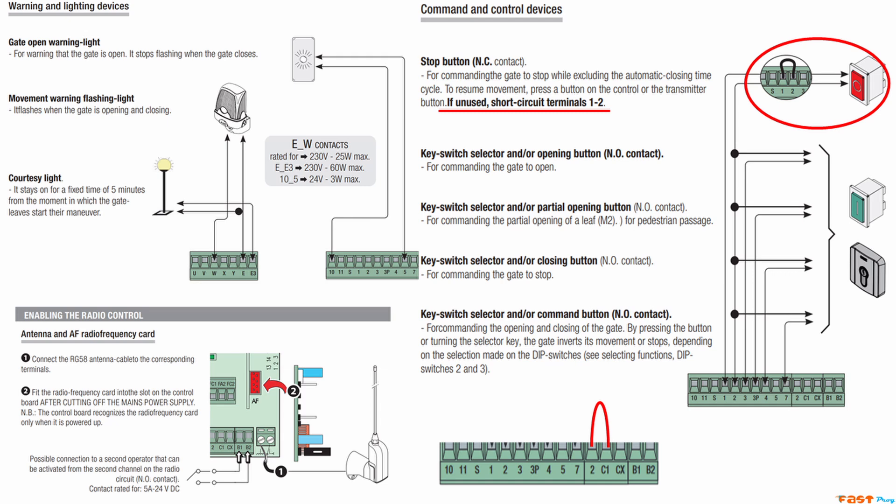If the blinking continues and you have a pair of photocells connected, make a jumper between terminals 2 and C1 to bypass them. If the LED turns off, it means the photocells are faulty, and you can check their alignment or wiring later.